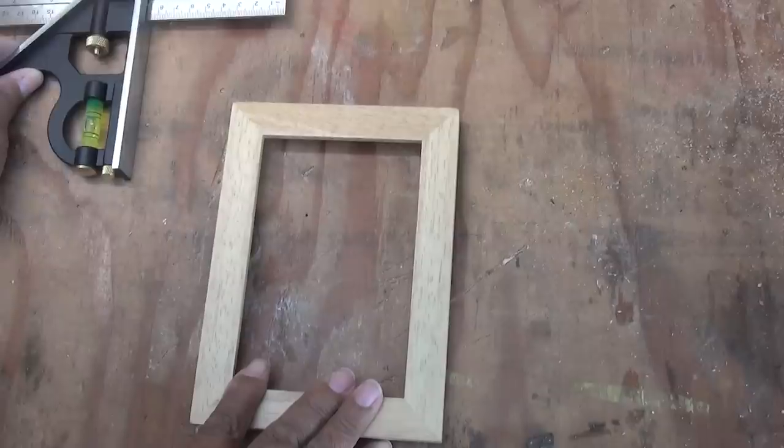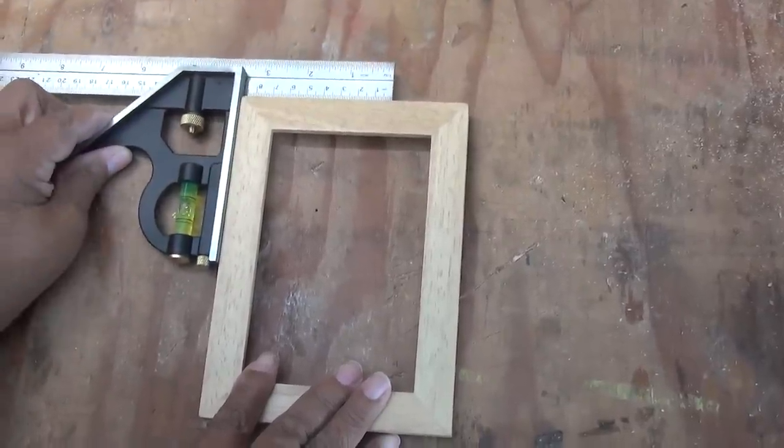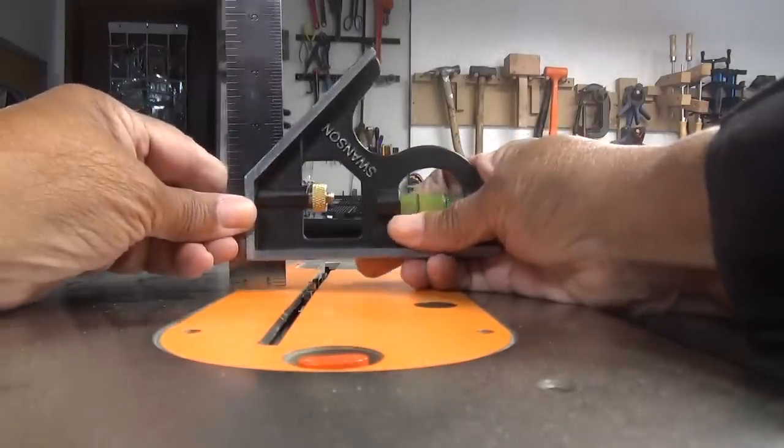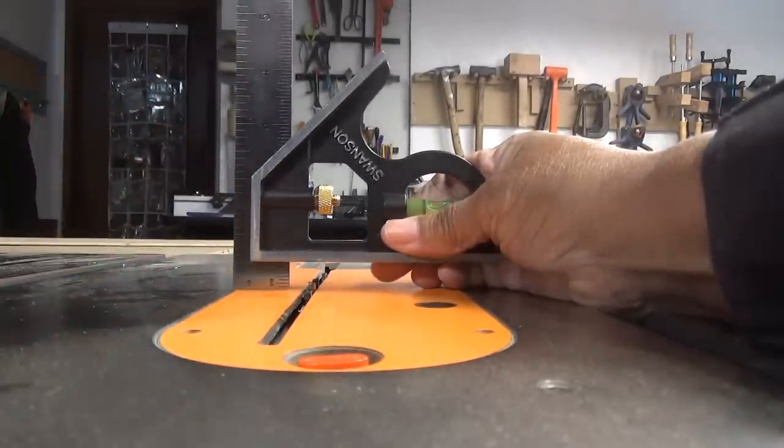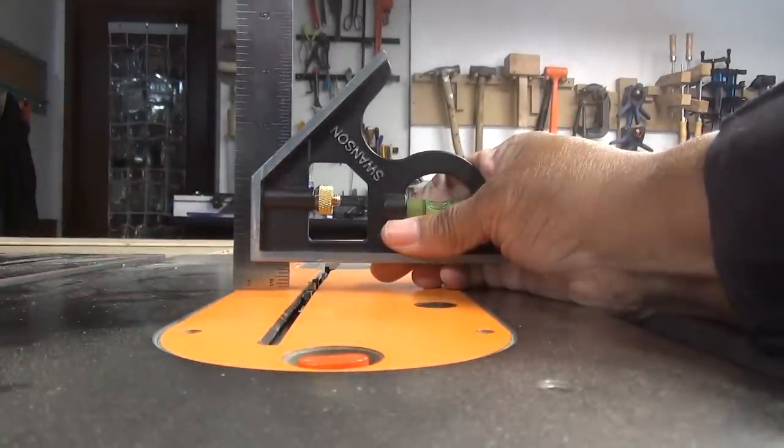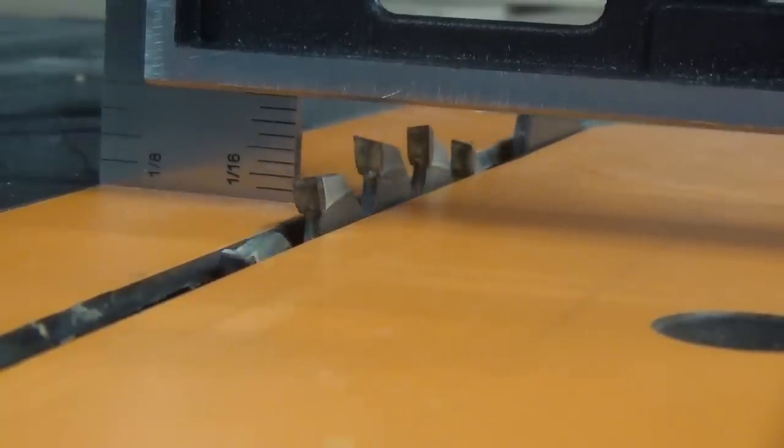It's also terrific for verifying 90 degree and 45 degree angles and if ever you need to set the height of the blade on your table saw it's really good for doing that as well.